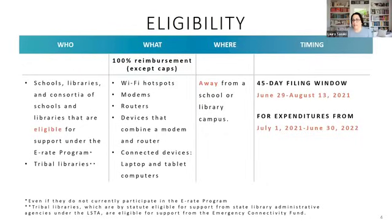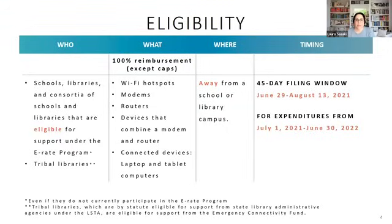Regarding applicant eligibility: eligible applicants are schools, libraries, and consortia of schools and libraries that are eligible for support under the E-Rate program. This includes those not currently participating in E-Rate — you are still eligible for the Emergency Connectivity Fund. Tribal libraries are also eligible — specifically those eligible for support from state library administrative agencies under LSTA.